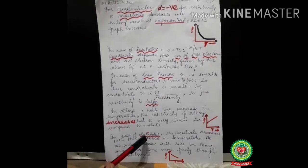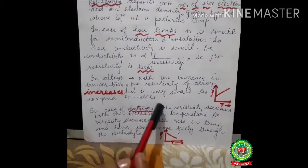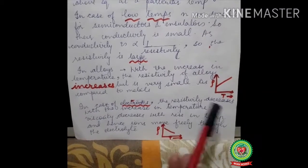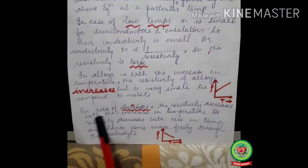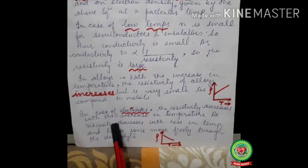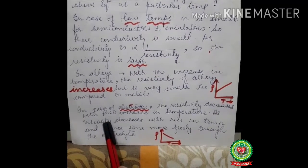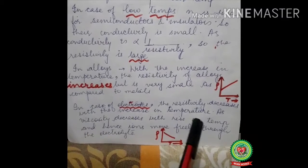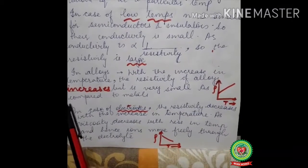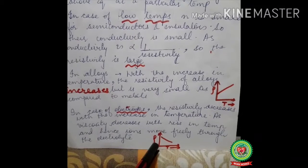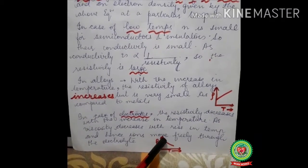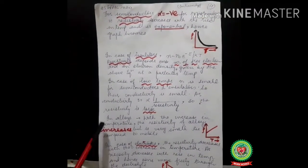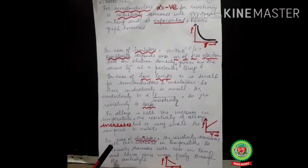For electrodes — as we see in inverters at home, electrodes are in liquid form — the resistivity decreases with the increase in temperature. This is because viscosity, which is the resistance offered in a liquid, decreases with rising temperature. When temperature increases, electrons are freer to move from one place to another, so resistivity decreases. The graph for electrodes goes downward. I hope you have understood the topics for semiconductors, insulators, alloys, and electrodes. Thank you students.